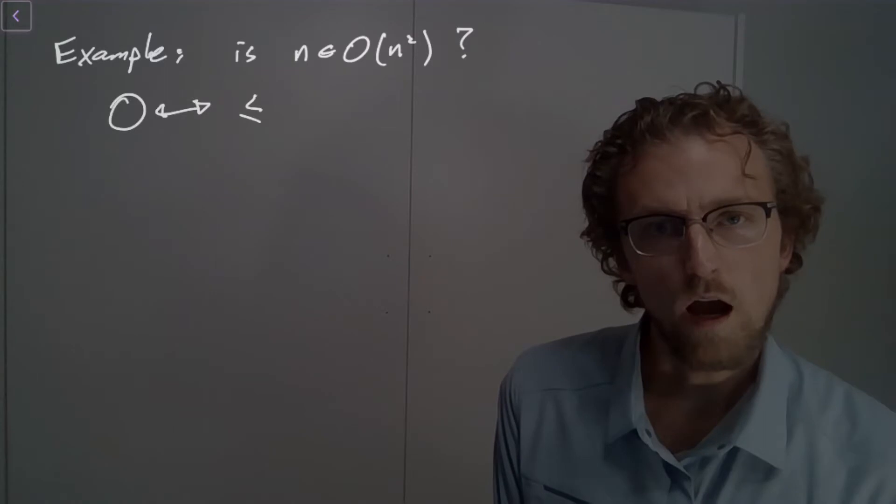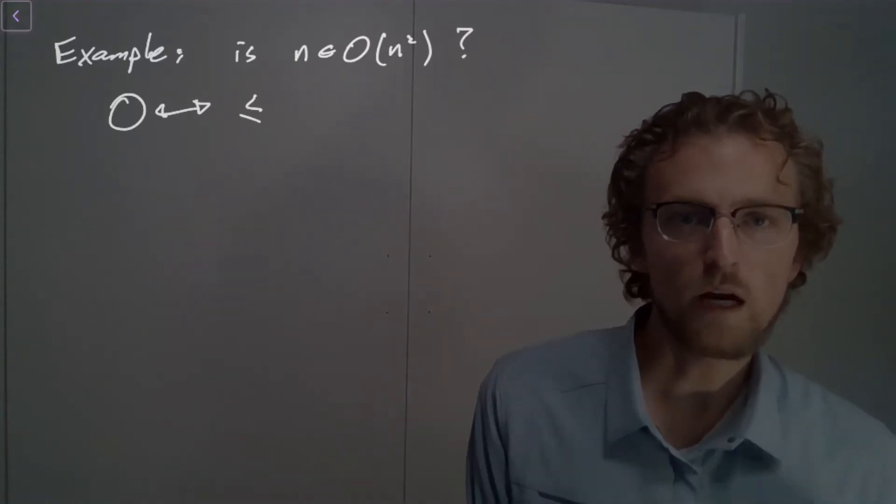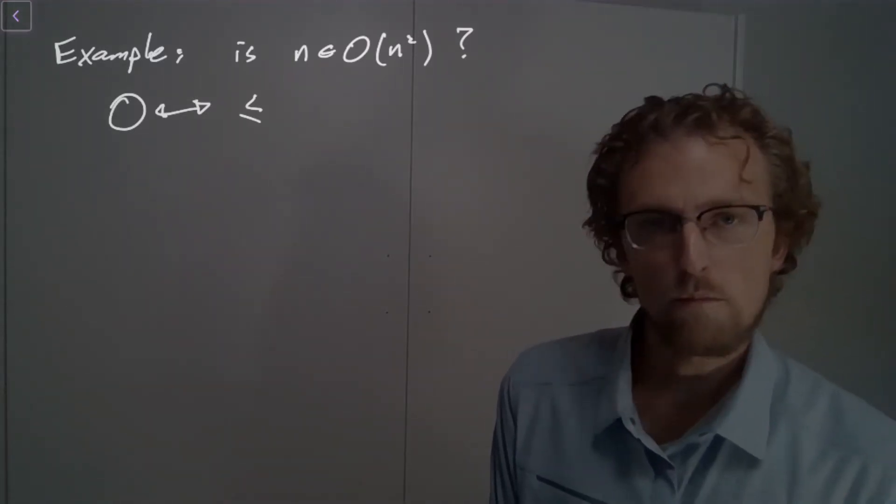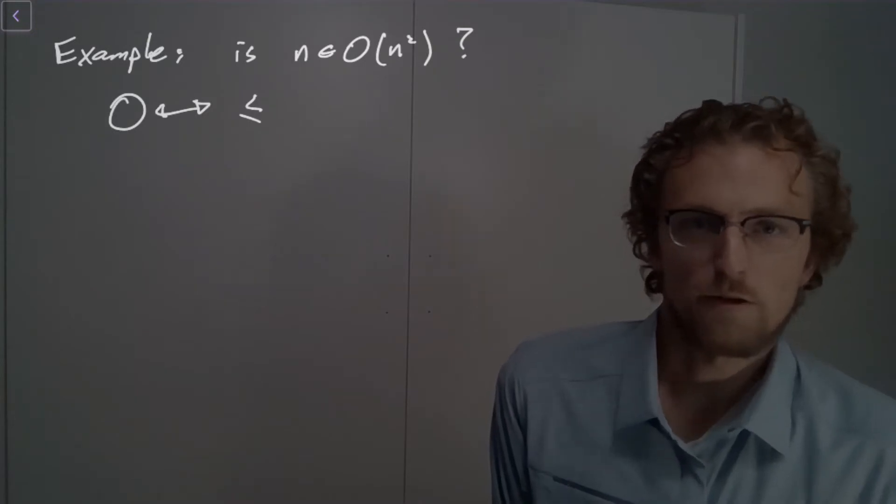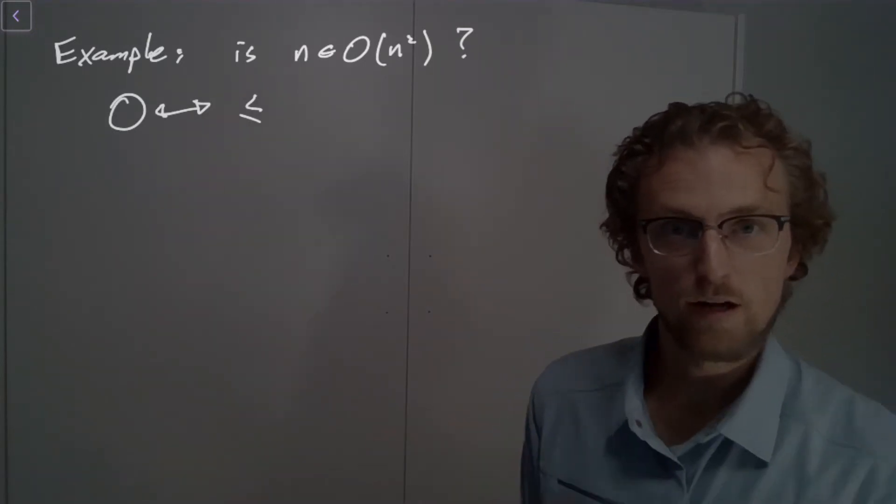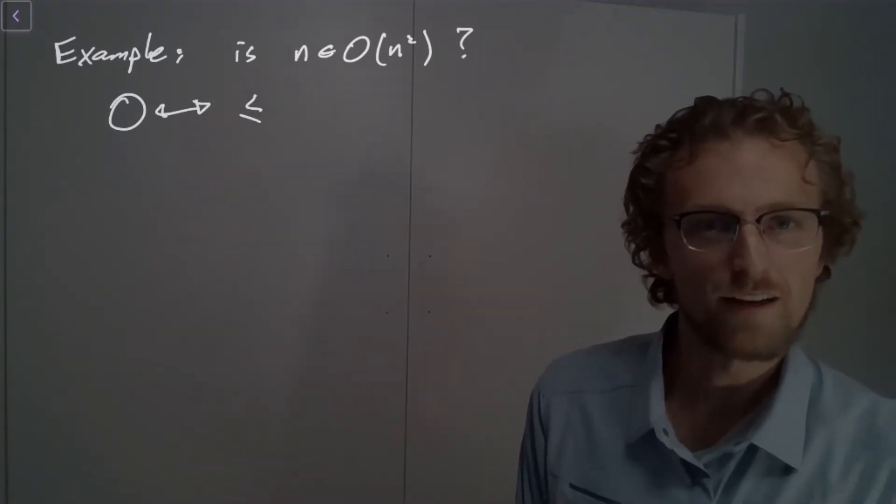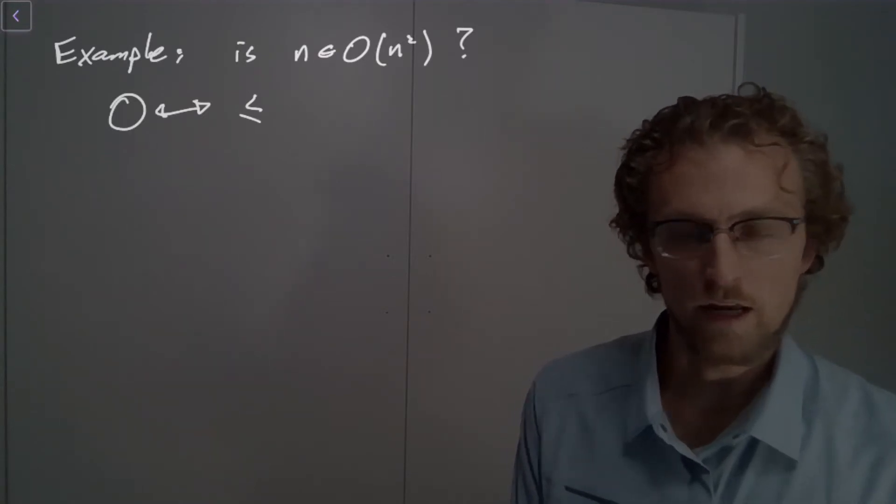So here, asking is n big O of n squared, has the very simple answer of yes, right? Because if we get large enough, in fact, if n is larger than 1, n squared is larger than n.